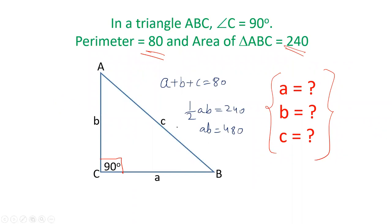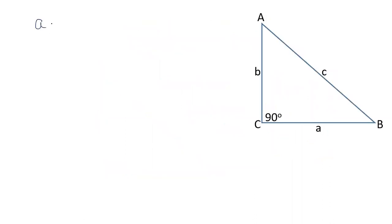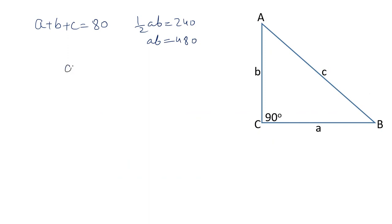The third formula is the Pythagorean theorem: perpendicular squared plus base squared equals hypotenuse squared. So let's write down all three equations. Once again: a plus b plus c equals 80; half ab equals 240, that is ab equals 480; and the third one is a squared plus b squared equals c squared.